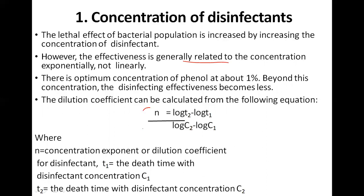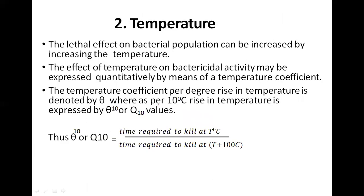The dilution coefficient can be found using a formula where n is the dilution coefficient for disinfectant, T1 is the death time with disinfectant concentration C1, and T2 is the death time with concentration C2. Using different concentrations, we can determine the coefficient — that is, how much concentration affects the bacterial population death rate.